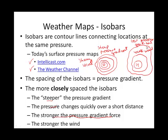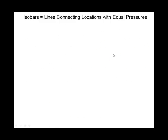A little warning: the change between isobars is not always the same. Usually isobars are written in terms of millibars, and usually the spacing is four millibars. But if it's a really steep pressure gradient, they'll go to eight millibars instead of four, and that kind of masks how tight and steep that pressure gradient actually is.